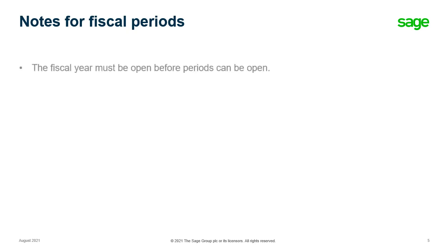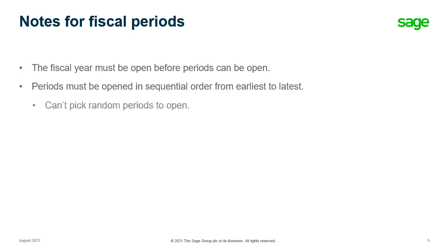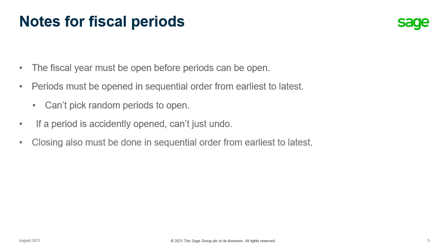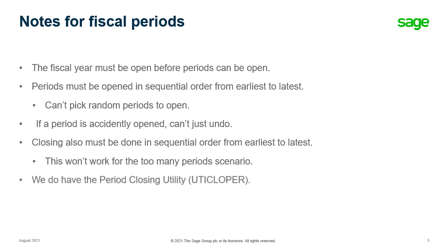Let's take a look at a few items about fiscal periods. The fiscal year must be opened before fiscal periods can be opened. Periods must be opened in sequential order from earliest to latest — you can't just pick random periods to open. Now, if a period is accidentally opened, you can't just undo it. You might think, can I just close that period? No. Closing also must be done in sequential order from earliest to latest, and this isn't going to work in your too-many-periods scenario. However, we do have the period closing utility to help you.